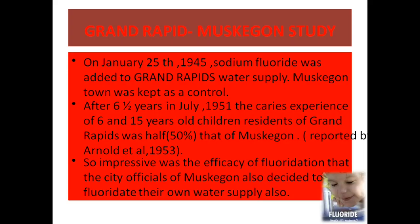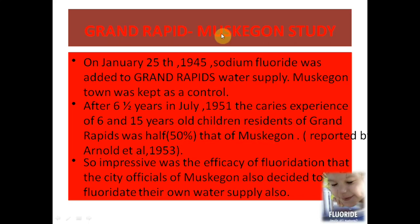For all these studies, you need to know when they started, the percentage of caries reduction, and the duration. The first study started in 1945 in Grand Rapids, which was the fluoridated city, while Muskegon was kept as the control. After six years the caries reduction was 50 percent compared to the control city. The first city in each study name is always the intervention city and the second is the control city.